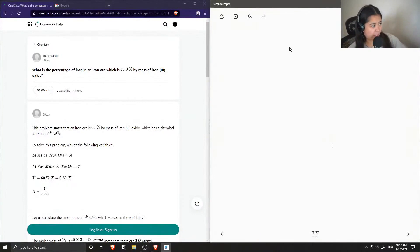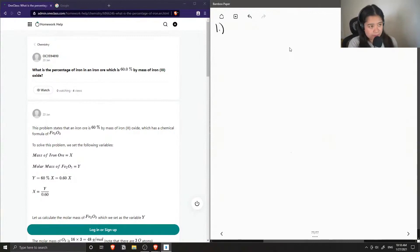Okay, so question one asks: what is the percentage of iron in an iron ore which is 60% by mass of iron oxide? Okay, so let's write down what we know. We know that 60% of iron is in iron oxide. So let's write down the formula for iron oxide, just so that we can see how many iron atoms are in iron oxide.